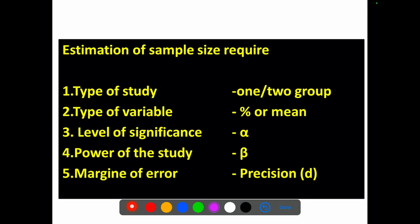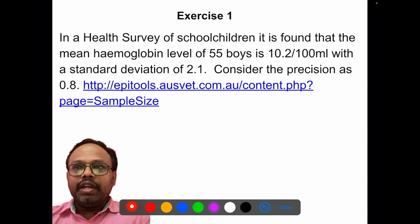Before going to do the study, be clear about whether you are doing estimation or comparison, whether you are dealing with proportion or means. Then decide the level of significance alpha — usually kept at 0.05 — and the beta level, usually 20% or 10% — and the margin of error or allowable error, the precision D. Here is an exercise. I may be going a little fast — you can pause and work it out.